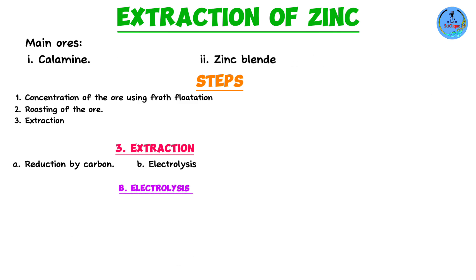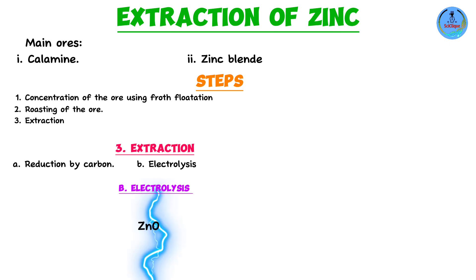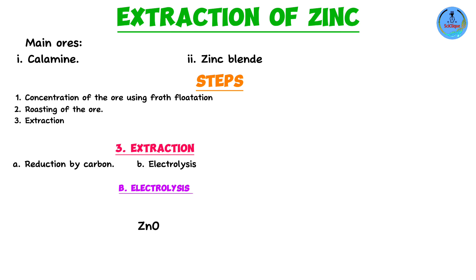The second method is electrolysis. Electrolysis is a process whereby an electric current is passed through a substance to bring about its decomposition, allowing us to extract zinc metal. However, we cannot electrolyze zinc oxide directly — electrolysis requires mobile ions. Zinc oxide would need to be either molten or dissolved in a solvent. Its melting point is close to 2000°C, making it impractical to melt.